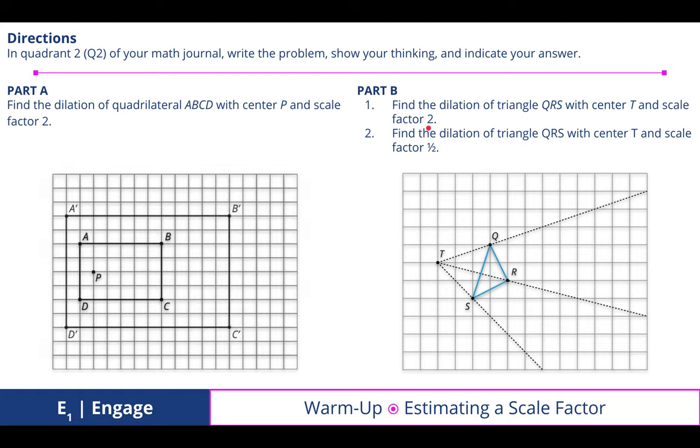For part B, find the dilation of triangle QRS with center at T. Notice how this center of dilation is outside the polygon, whereas the one in part A was inside the polygon. By creating a scale factor of 2, I found the distance from the center of dilation to each vertex and doubled it. And these are the results.